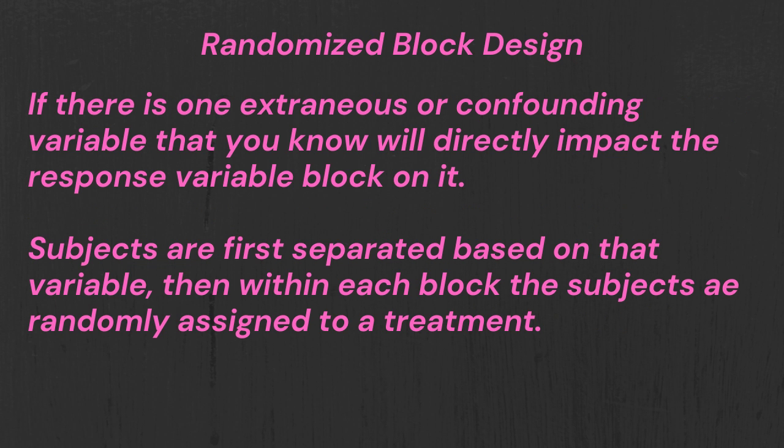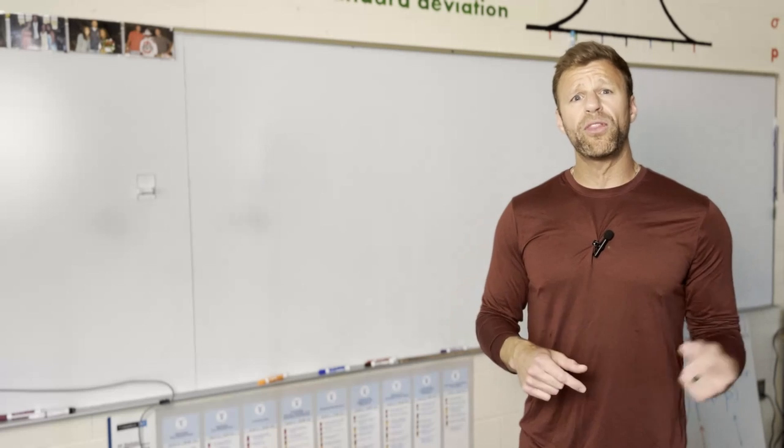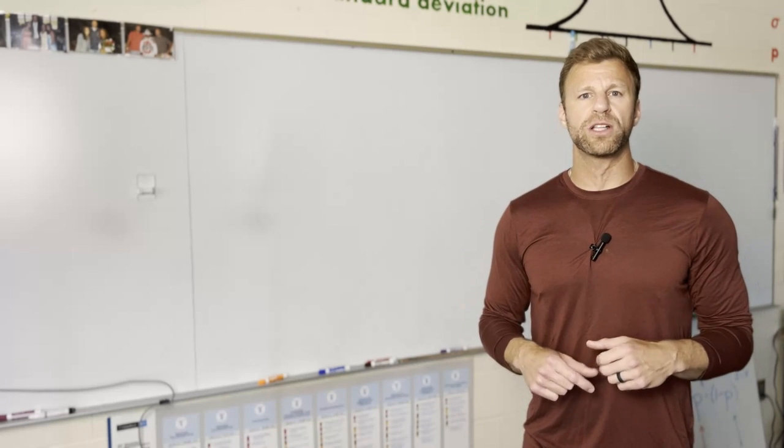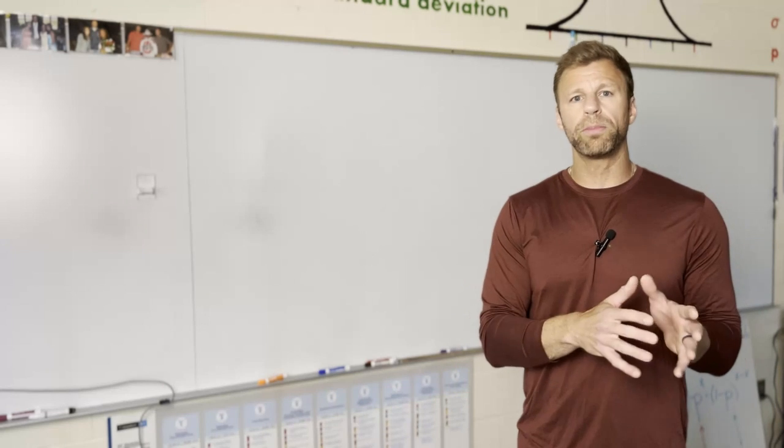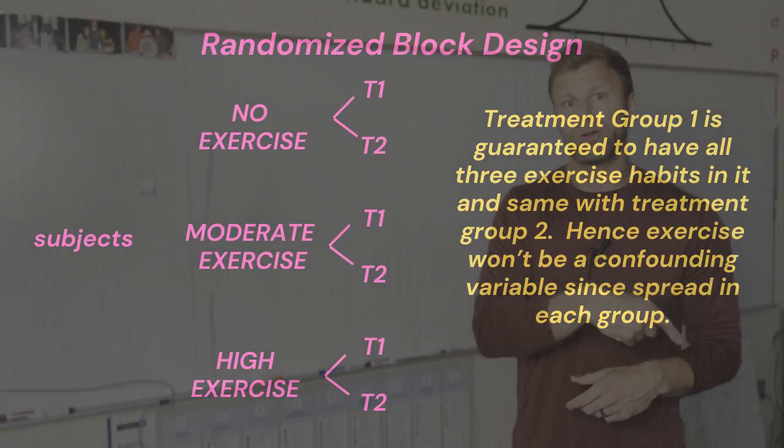The second is a block design. This is if there's another variable that we think is just way too important to just leave up to chance. So let's say diet for our experiment just matters too much. Diet's definitely going to affect the response variable. Again, we block on a variable that we really think is going to affect that response variable. So then we create blocks. One block of people that might not exercise, moderate exercise, exercise a lot. In each block, we do a separate mini experiment giving out all treatments randomly, of course. This allows for our treatment groups to have a nice mix of all different exercise habits. That way, as I've already said, in that treatment group, we got a nice mix. And in the other treatment group, we got a nice mix.